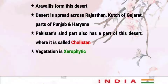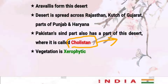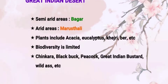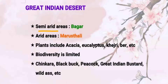Pakistan's Sindh part also has a portion of this desert. In Pakistan, the Thar Desert is called Cholistan — the part of the Thar Desert which lies in Pakistan's territory is called Cholistan. The vegetation present in the Thar Desert is xerophytic vegetation, where there is scanty rainfall and the plants are mostly thorny. These plants have a huge capacity to store water for longer periods, like cactus and acacia.